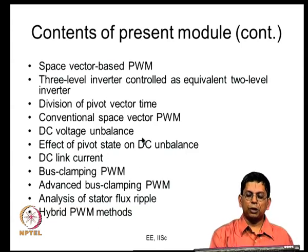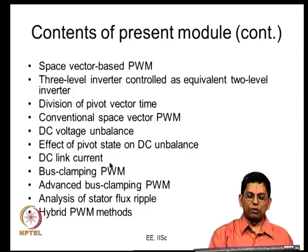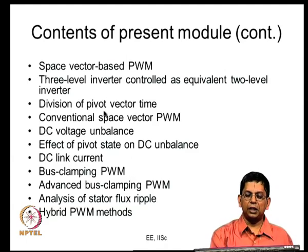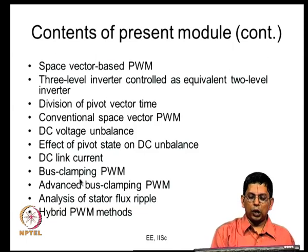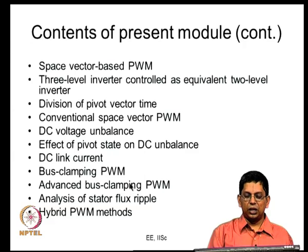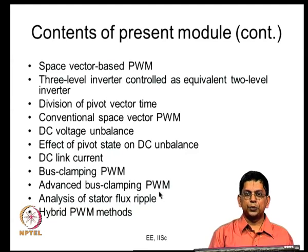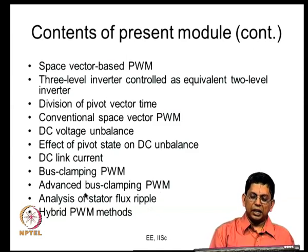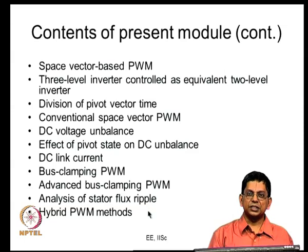The two pivot states have some influence on DC voltage balance. We will look at the effect of pivot state on DC voltage balance and evaluate the DC link current for a three-level inverter as we did for a two-level inverter. We will also look at bus clamping PWM from the space vector point of view — here only one pivot state is used. We will also discuss advanced bus clamping PWM extended to the three-level inverter, then look at error voltages and stator flux ripple analysis.